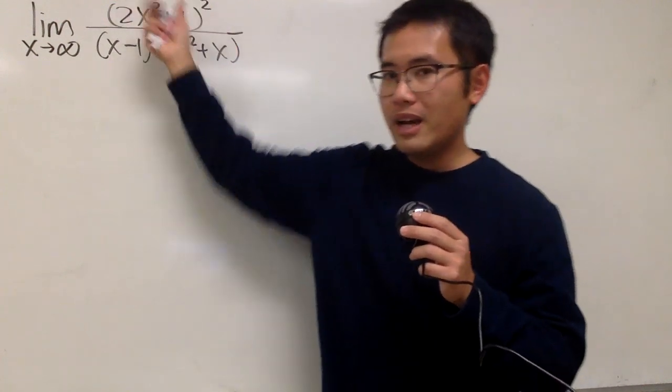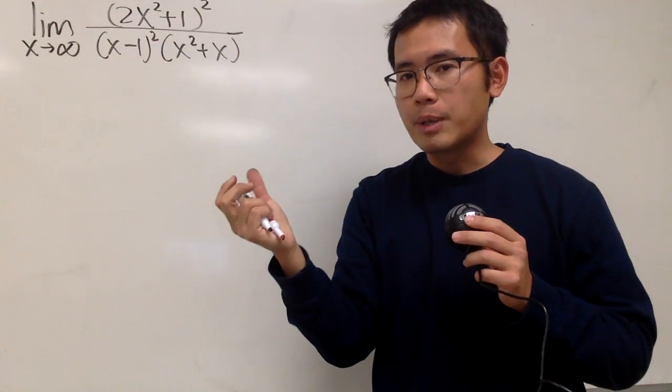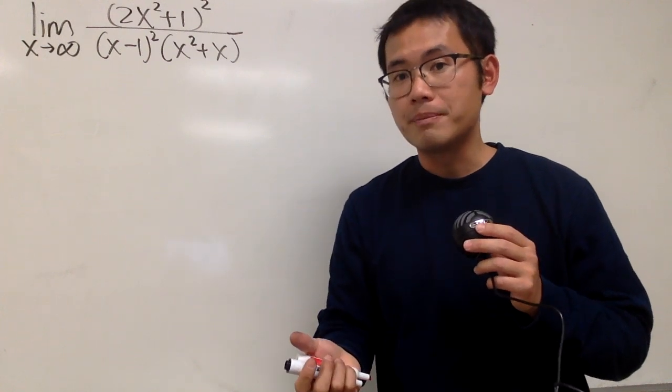First is you can just multiply everything, and then pick the highest power on the top, and also the highest power on the bottom. So that's fine.